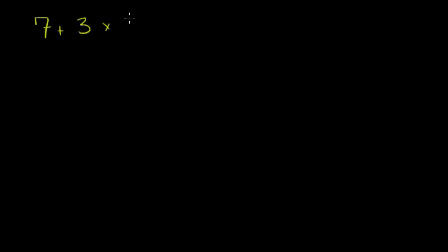So what do we even mean when we say order of operations? The whole point is so that we have one way to interpret a mathematical statement. So let's say I have the mathematical statement 7 plus 3 times 5. If we didn't all agree on order of operations, there would be two ways of interpreting this statement.